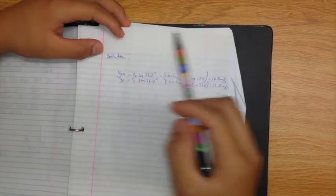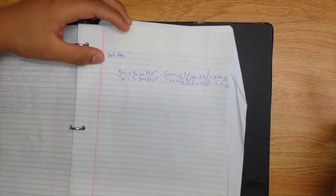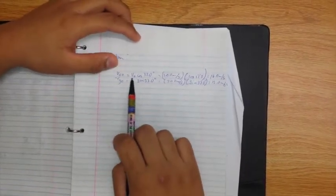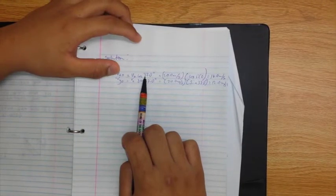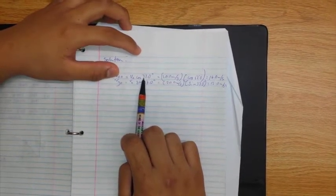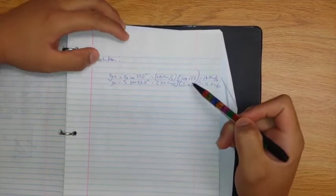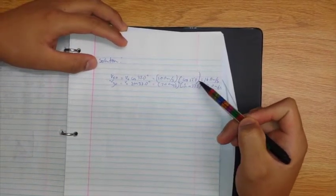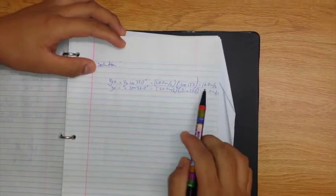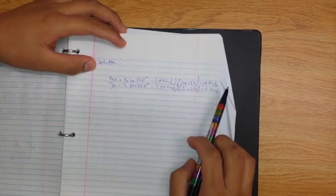First, we resolve the initial velocity into each component. In the x component, we multiply v initial by cosine 37 degrees, which is equal to 20 meters per second multiplied by cosine 37 degrees, which equals 16 meters per second.